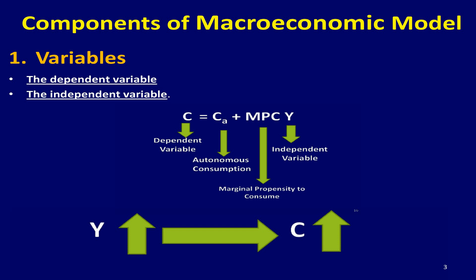The dependent variable is the variable that is affected by other variables. It is also known as the endogenous variable. The value of the dependent variable is determined within the model — it is explained by the equation.